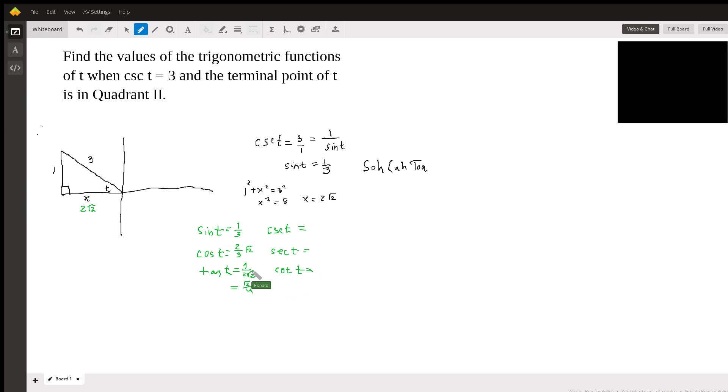So all I did was opposite over adjacent, one over two root two, and then multiply top and bottom by root two. So one times the square root of two is the square root of two. Two times the square root of two times the square root of two is four.